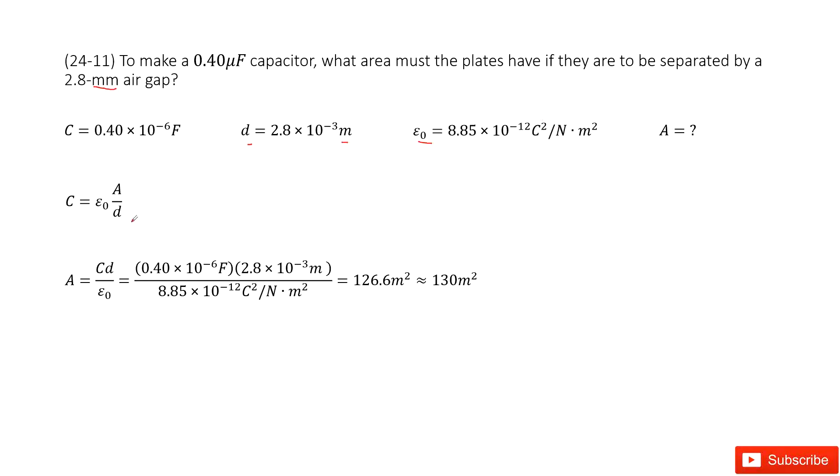We can straightforwardly write down the equation for capacitance. The capacitance is determined by the constant epsilon naught and A over d.